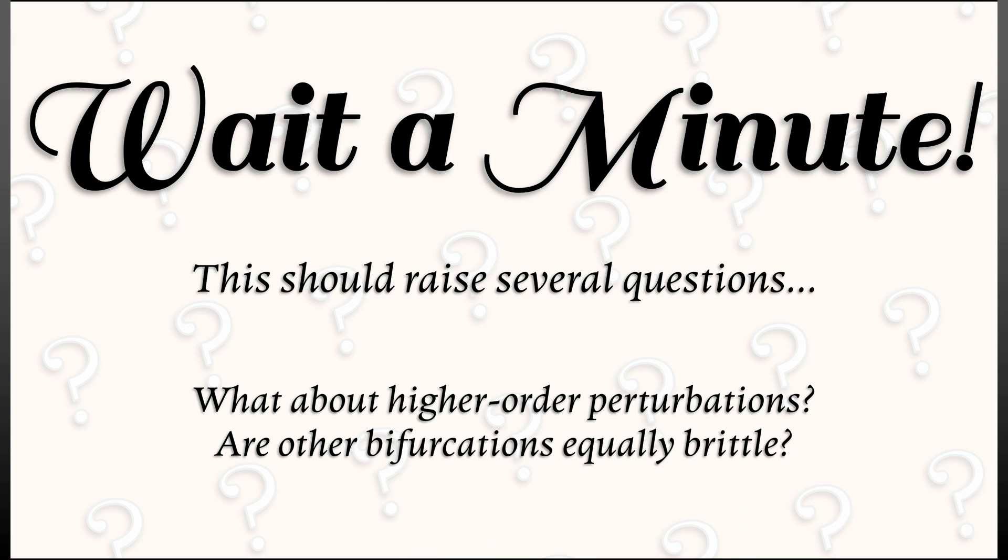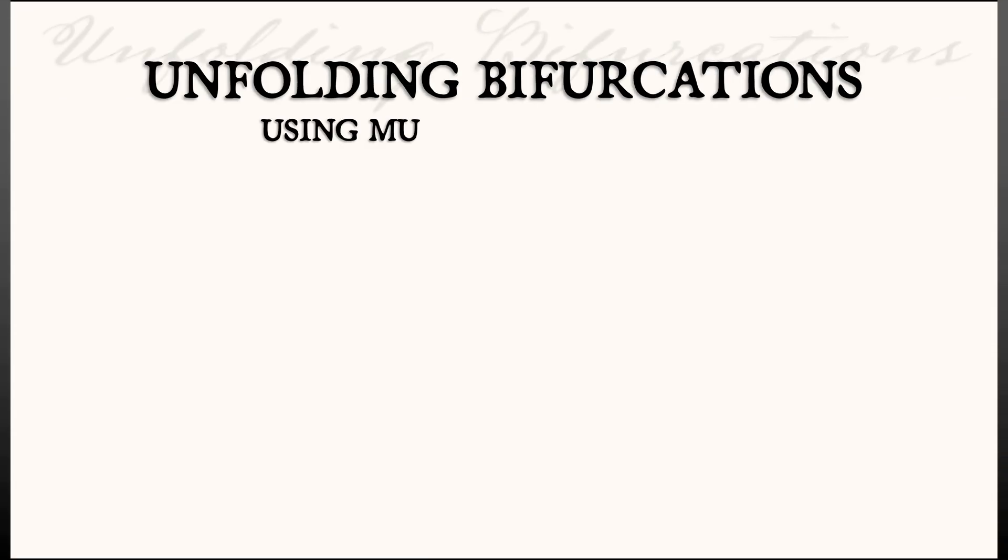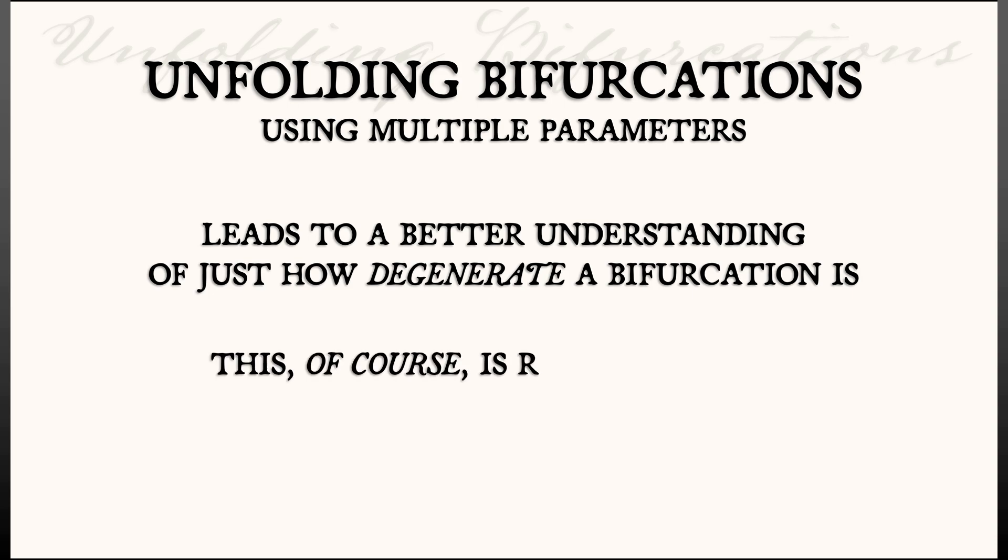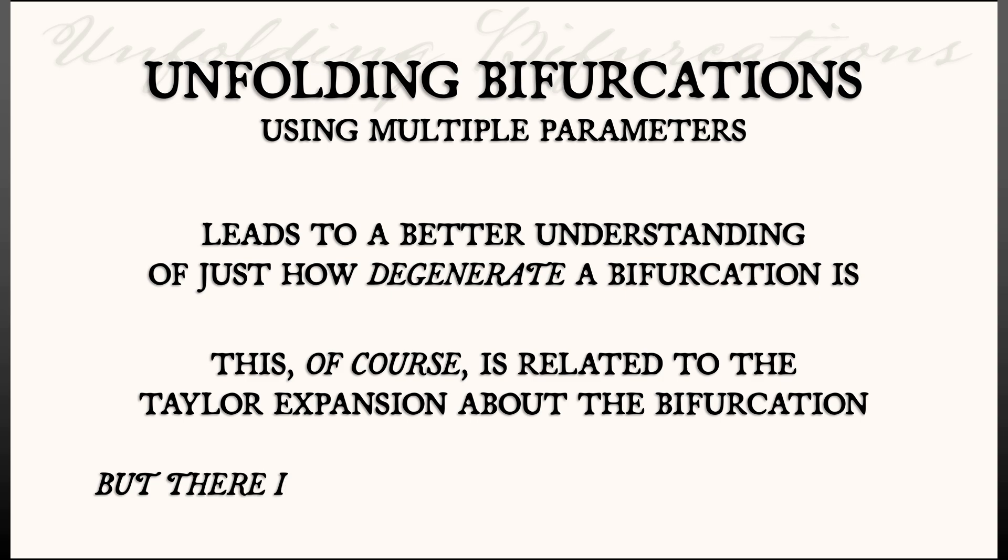To say that one type of bifurcation is more degenerate than another? This is just the beginning of our story on unfolding bifurcations. But with the simple amount that we have done, we can see that it leads to a much better understanding. Now, of course, everything, everything goes back to Taylor expansions. But there's more going on here than just a Taylor expansion.